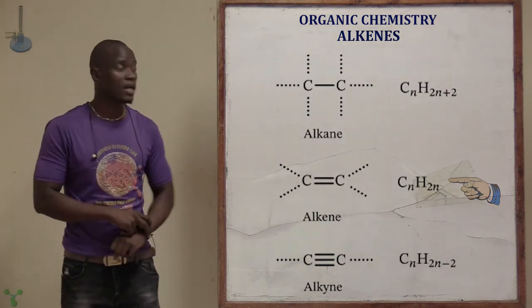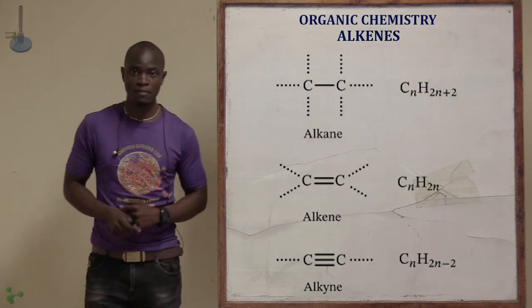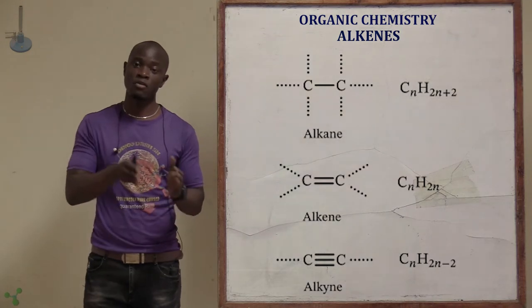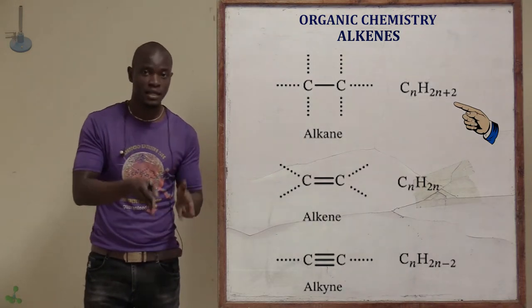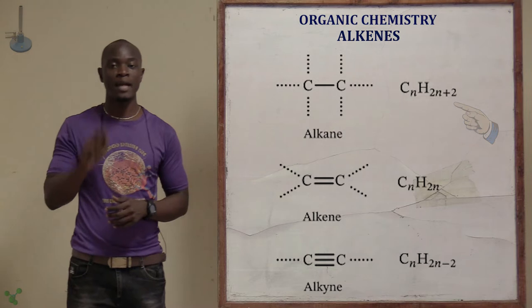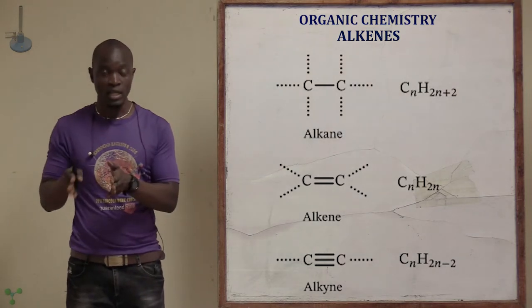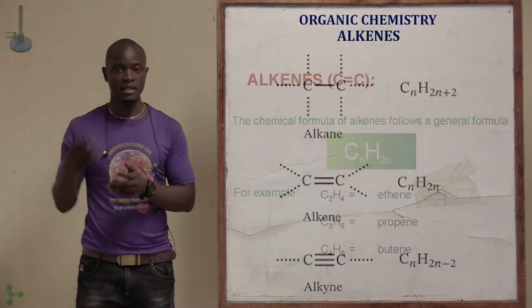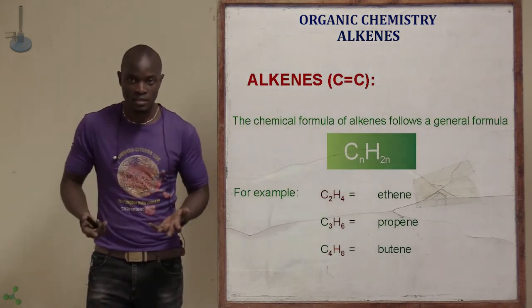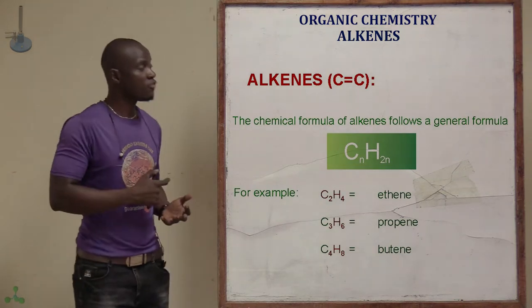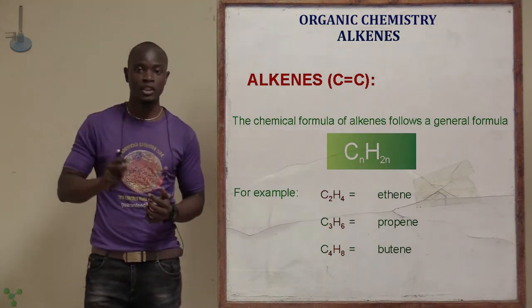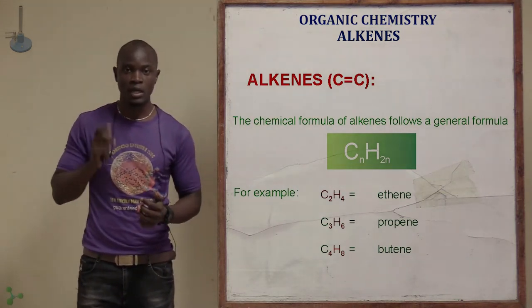That's the general formula for alkenes. Remember, the general formula for alkanes was CnH2n+2. Now for alkenes, the general formula is CnH2n.